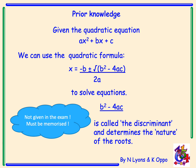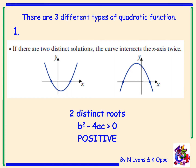What do I mean by the nature of the roots of a quadratic function? There are three different types. Type 1: you can see from the diagram that there are two distinct solutions — two distinct roots, two points where the function cuts the x-axis. The first curve has a minimum turning point and the second has a maximum turning point. These have two distinct roots when the discriminant b squared minus 4ac is greater than zero — a positive number.